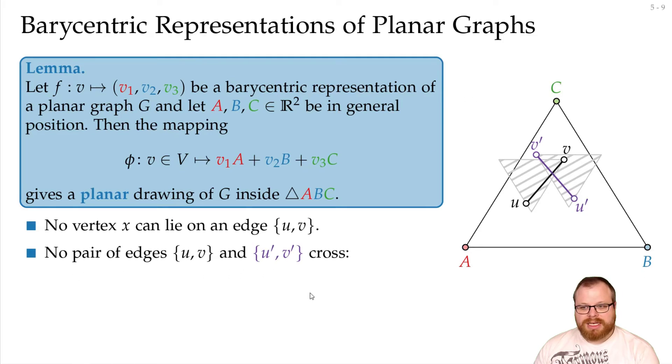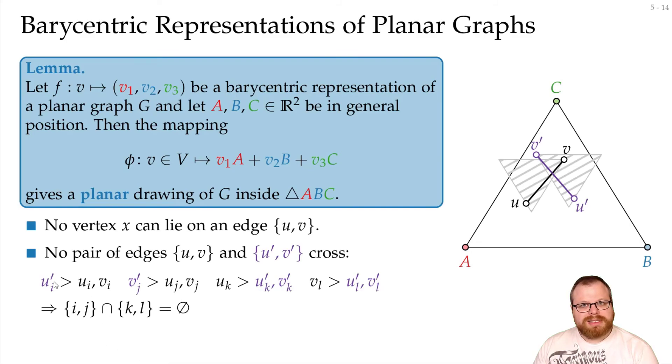By our property, there is some index such that u prime is closer to the corner than u and v. The same holds for v prime with respect to u and v, for u with respect to u prime and v prime, and for v with respect to u prime and v prime. Now, if u_i prime is larger than u_i and v_i, then that means that this index here cannot be an i, because then we would have u_i prime is larger than u_i, which is larger than u_i prime. Also, this index cannot be an i. That means these are distinct, the same way j and k cannot be the same, and j and l cannot be the same. But since there are only three indices, that means that i and j must be the same, or k and l must be the same, otherwise this is not possible.